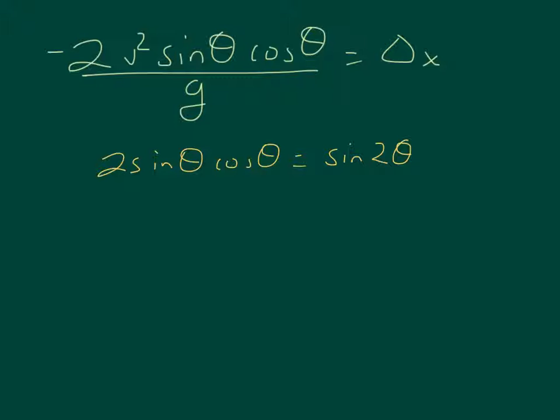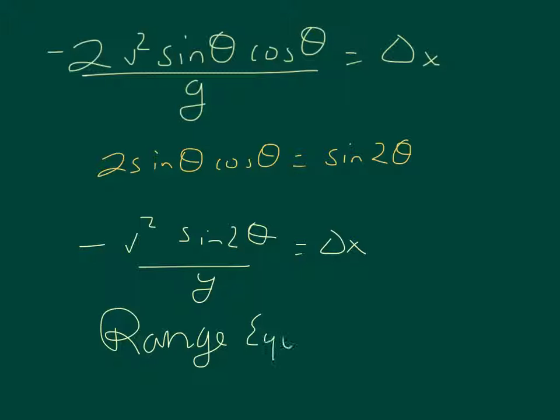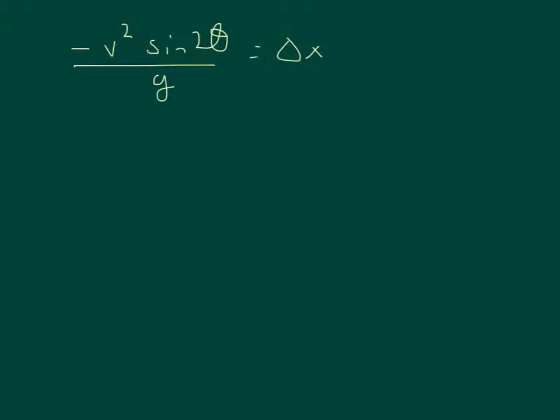Given that, this converts to negative v squared sine 2 theta over g equals delta x. This is known, actually, as the range equation and you can memorize it, but it only works for this situation.